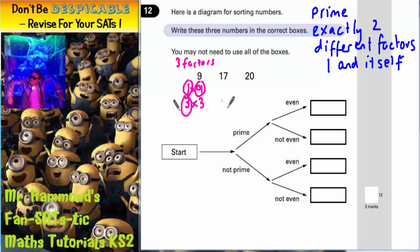What about 17? Well, we can have 1 times 17. And that's it. We can't make 17 in any other way. So 17 has actually only got two factors and therefore 17 is prime.